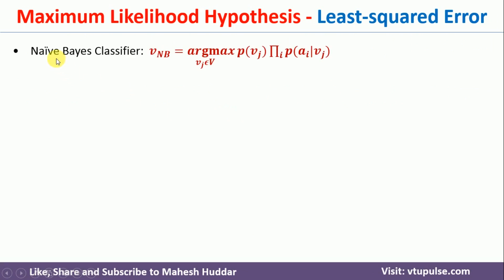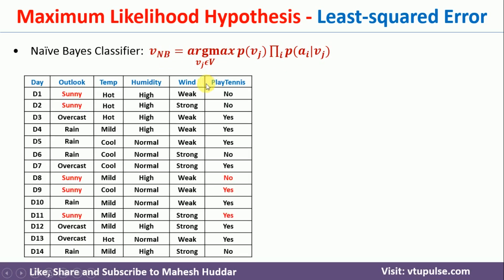In the previous video, I discussed the Naive Bayes classifier. The link for that video is given in the description below. In the Naive Bayes classifier, we calculate the posterior probability using this equation. The hypothesis which gives you the maximum probability will be considered as the final hypothesis. Let us take an example: this is data with 14 examples, 4 attributes, and a final target class. Each attribute has discrete possibilities, and the target also has discrete possibilities.